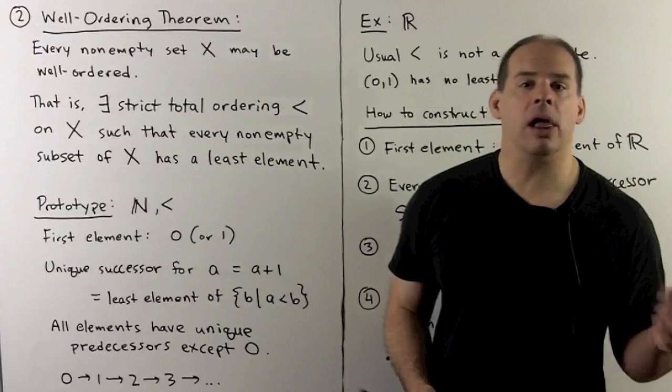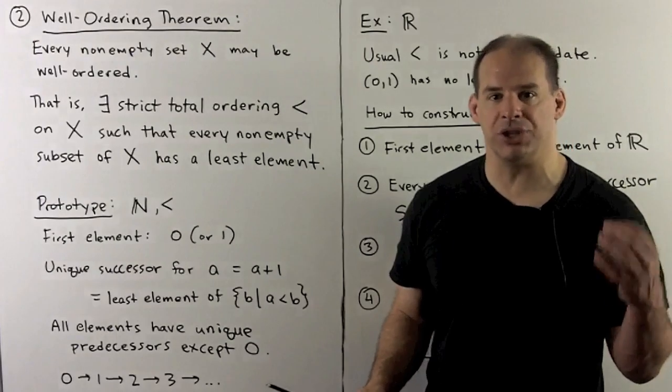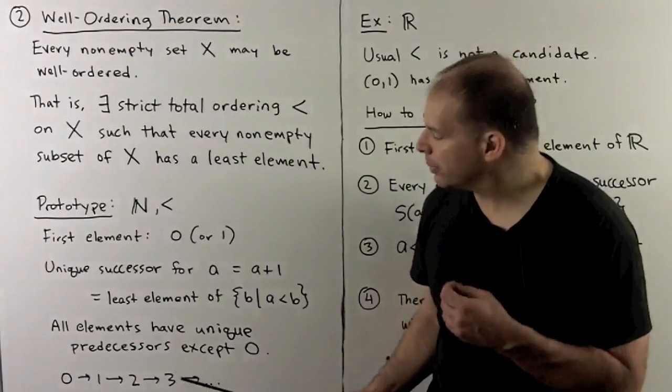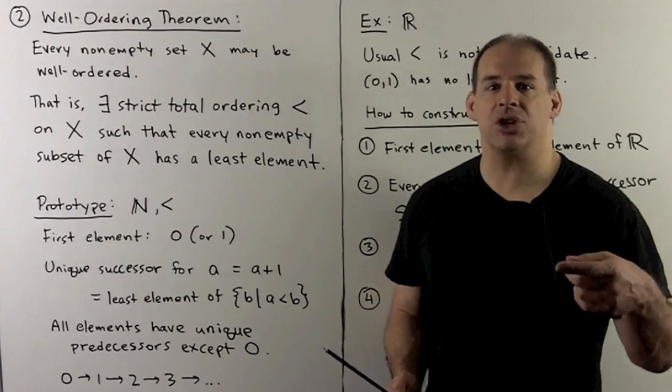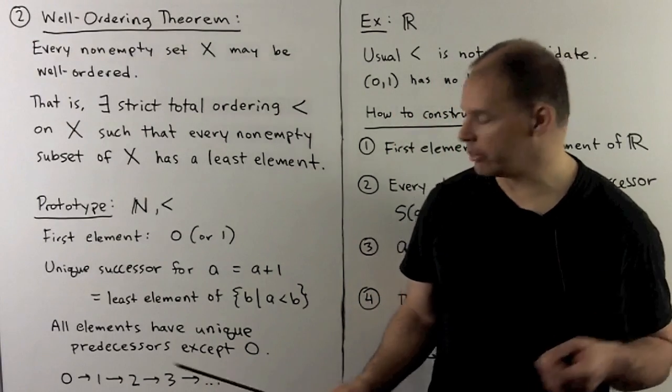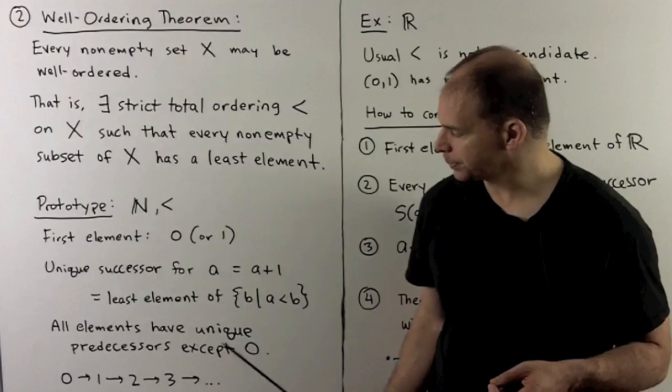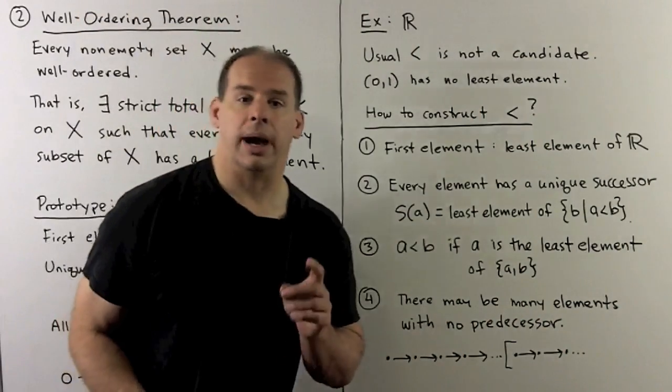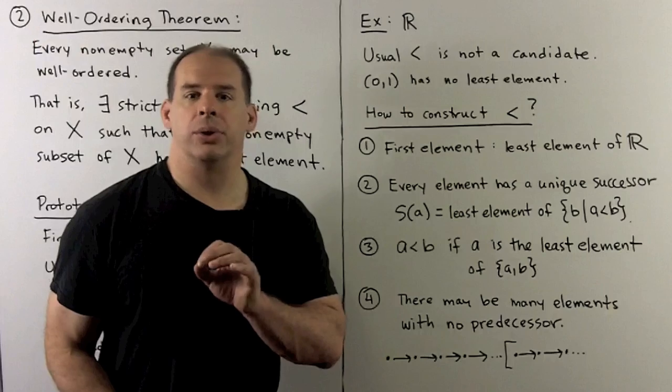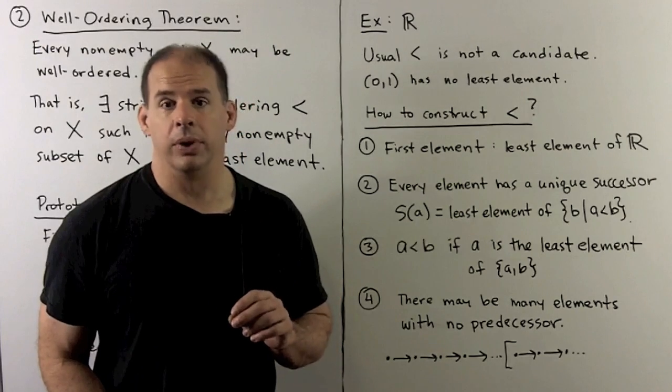Finally, for the natural numbers, all elements have a unique predecessor except for 0. Our picture looks like this: we start at 0, we continually take successors until we sweep out all the natural numbers.